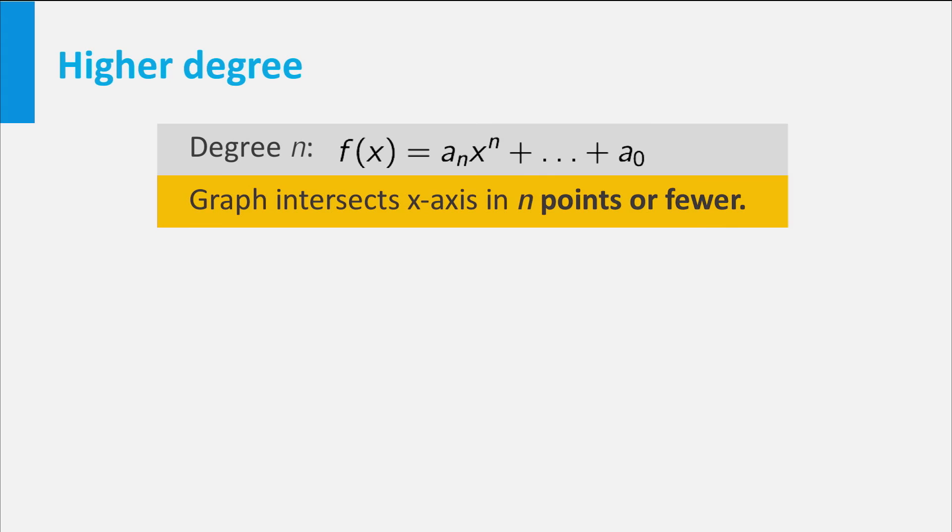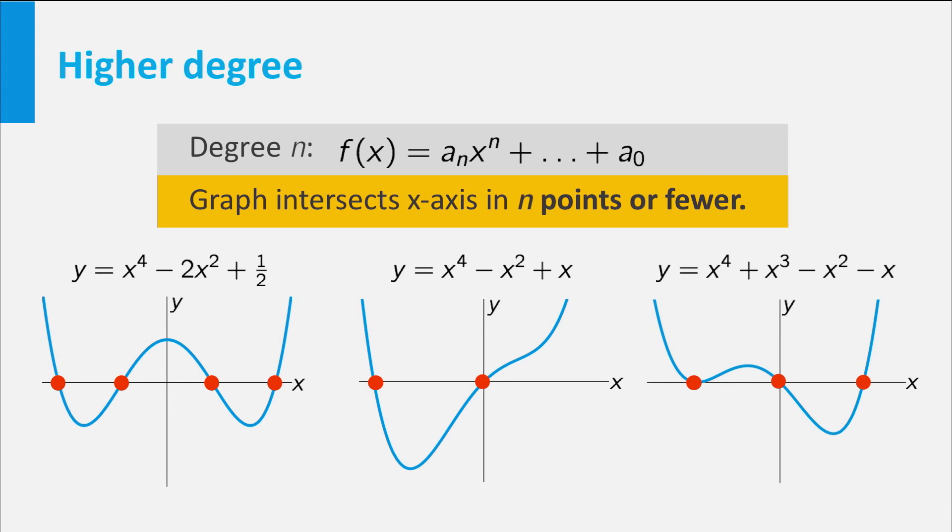For example, the graph of a degree 4 polynomial function may intersect the horizontal axis in 4 points or in less than 4 points, but never more than 4.